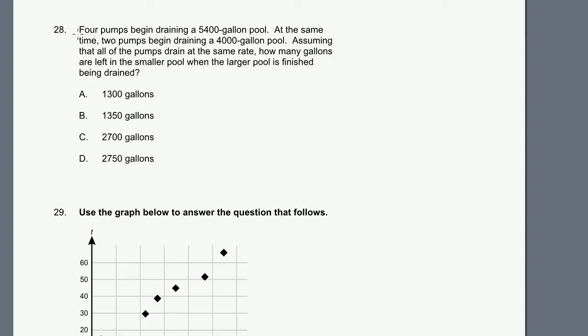We're on problem 28. Four pumps begin draining a 5,400 gallon pool. At the same time, two pumps begin draining a 4,000 gallon pool. Assuming that all of the pumps drain at the same rate, how many gallons are left in the smaller pool when the larger pool is finished being drained? Notice they didn't tell us how fast the pumps work.